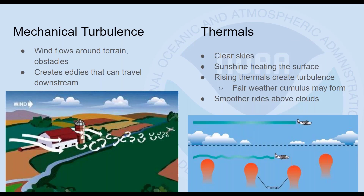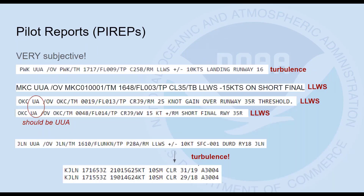Mechanical turbulence occurs at the surface where there's a lot of friction from trees and buildings. Wind works around those obstacles, causing eddies that are pulled downstream, creating bumpy conditions. Then there are thermals from surface heating during the day — the air near the surface heats up and starts to rise. You might encounter rising air as thermals late morning into early afternoon, with less of that as the atmosphere becomes better mixed during the afternoon. Above the cloud layers you'll have a much smoother ride.